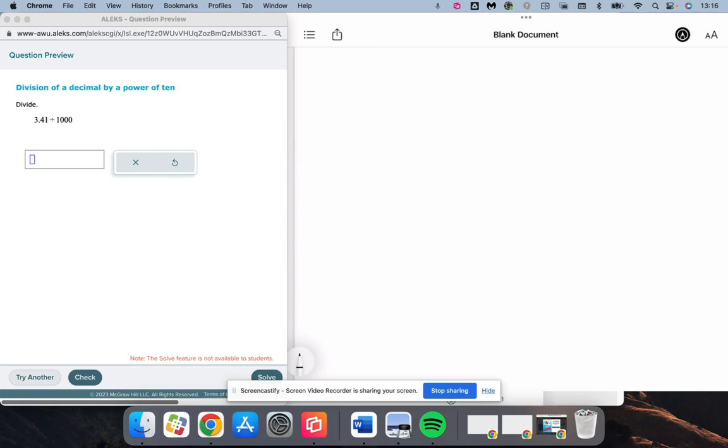Now all we need to do is say, I've got 3.41 and I'm dividing by 1,000, that's 3 zeros. So my decimal needs to move to the left 3 spots: 1, 2, 3. Fill in the empty spots with zeros, and that's our answer. We are going to have 0.00341 as our answer for this one. That looks correct.